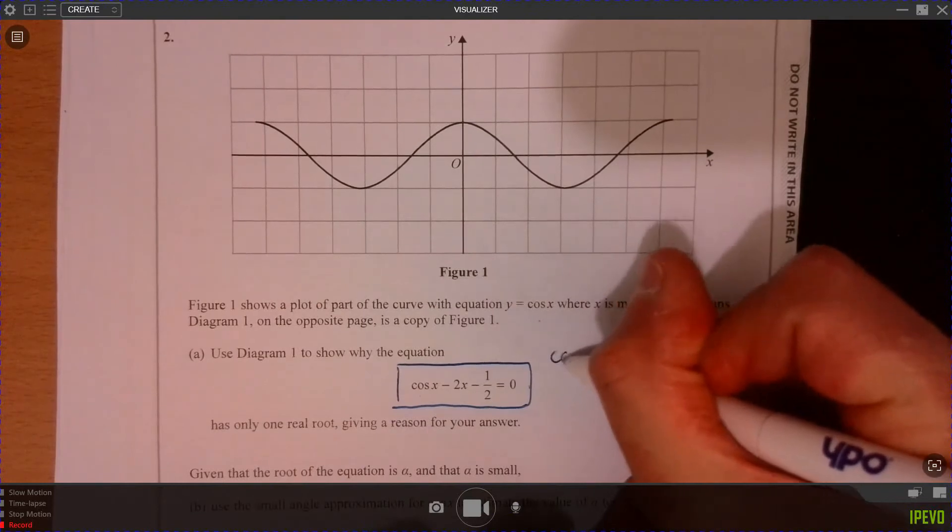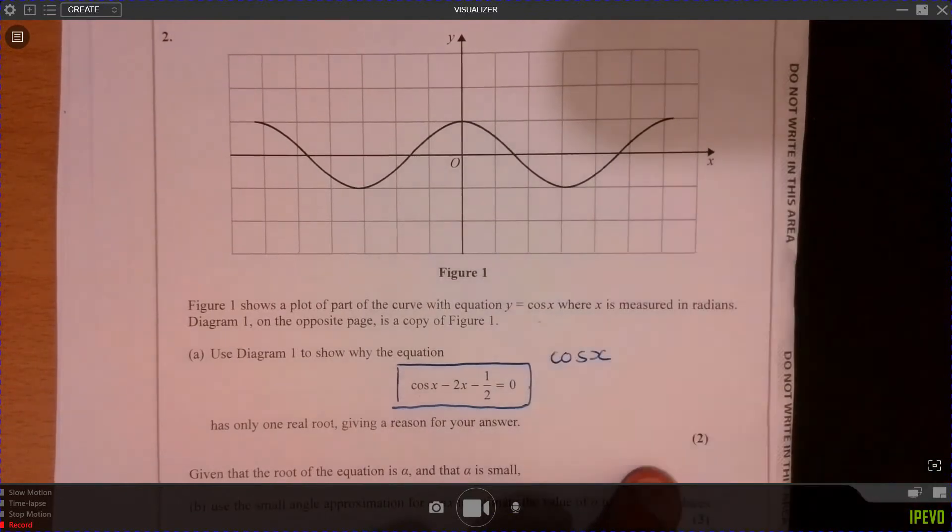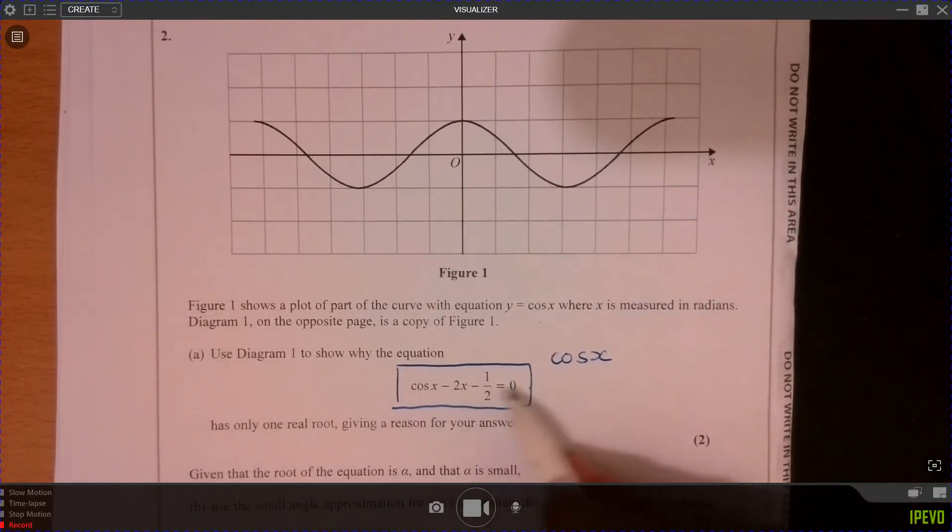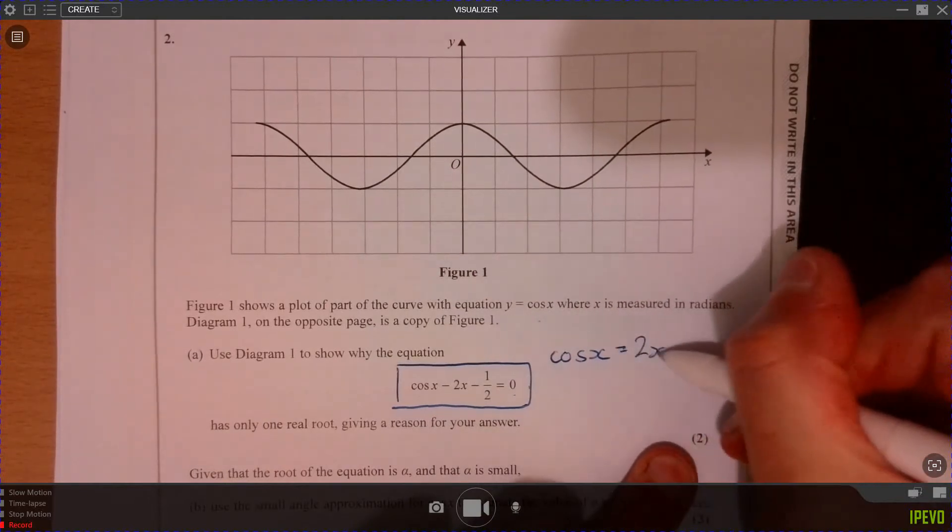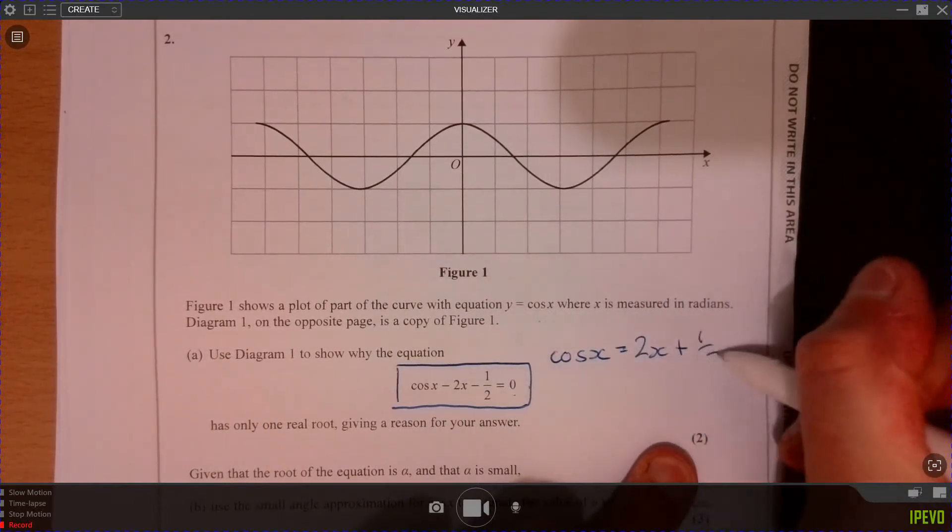Well, the easiest thing to do is, as we've got cos x already drawn, add 2x, add half to both sides. So we get 2x plus a half.